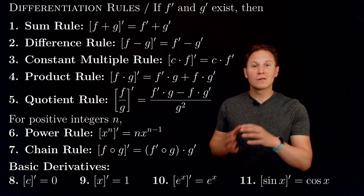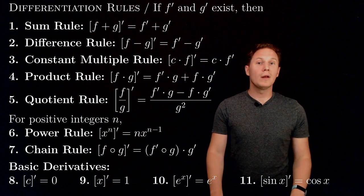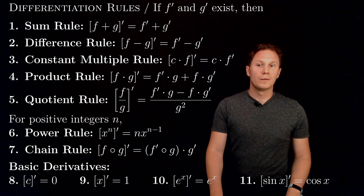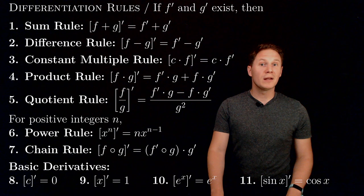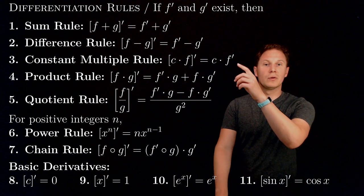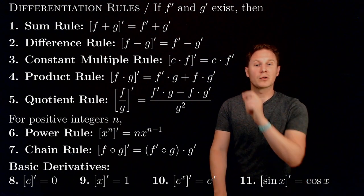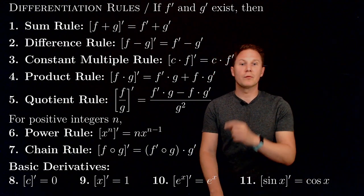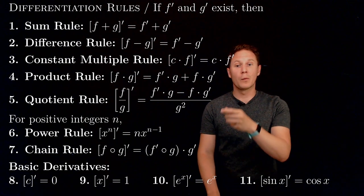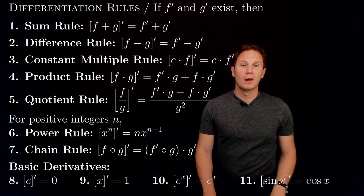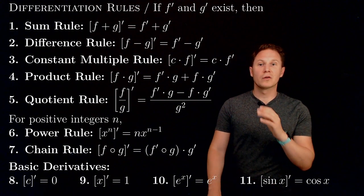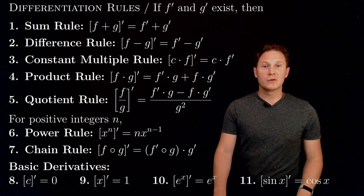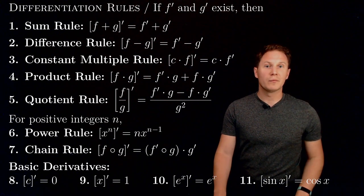With this list of rules we can differentiate all elementary functions. Notice that these rules are not completely independent — for example, the constant multiple rule is just a special case of the product rule, and the power rule can be obtained from the product rule applied repeatedly along with the basic derivative. Nevertheless, we will use this list of rules to find derivatives for all elementary functions, so let's compute some derivatives.